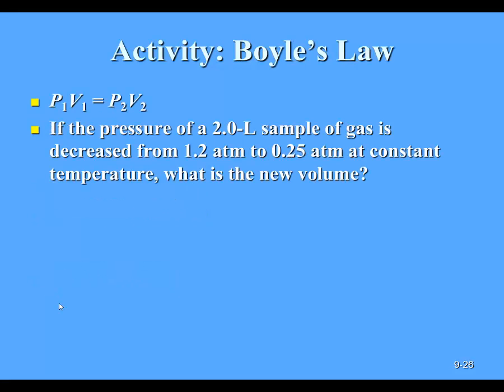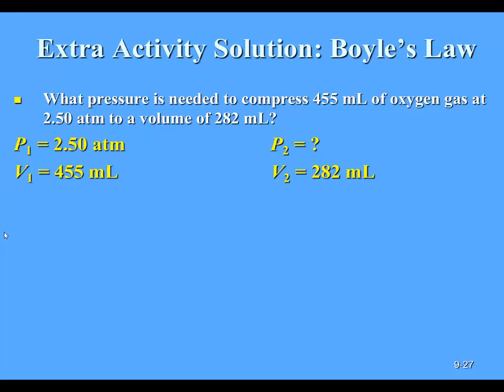Let's try applying this equation. If we have a gas sample at 2 liters of volume, and it's going to decrease from 1.2 atm to 0.25 atm in pressure at constant temperature and with a constant number of moles of gas, let's go ahead and find the new volume. Since we're keeping temperature constant and moles constant, we can use the equation defined previously. Let me define my variables. My initial pressure P1 was 2.50 atm.